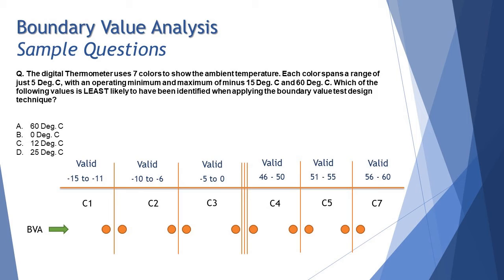Our main intention here is to understand what could be your boundary values right, and you have to pick that one option which is not or least likely to be a boundary value and for that you just have to figure out the numbers.